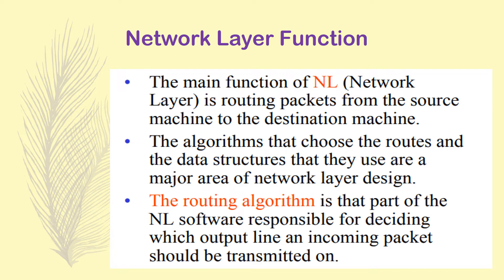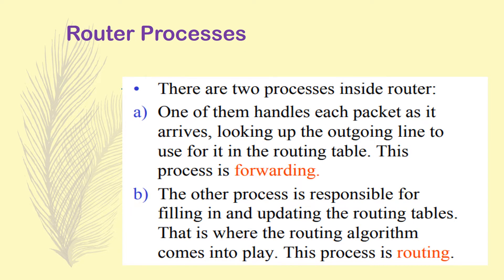The routing algorithm is part of the network layer software responsible for deciding which output line an incoming packet should be transmitted on. Inside a router there are two processes: one handles each packet as it arrives, looking up the outgoing line in the routing table — this is simple packet forwarding, where every packet is forwarded to the adjacent node. The other process is responsible for filling in and updating the routing tables — that is where the routing algorithm comes into play, deciding how to proceed based on a particular policy.